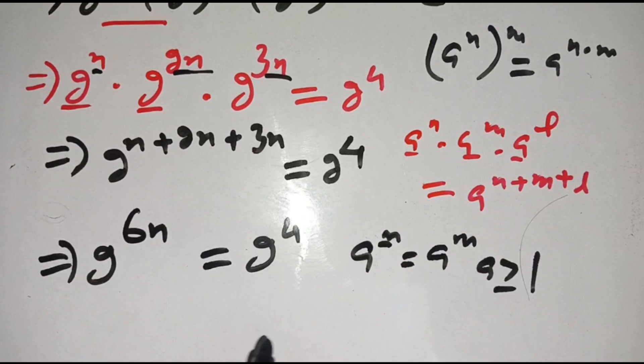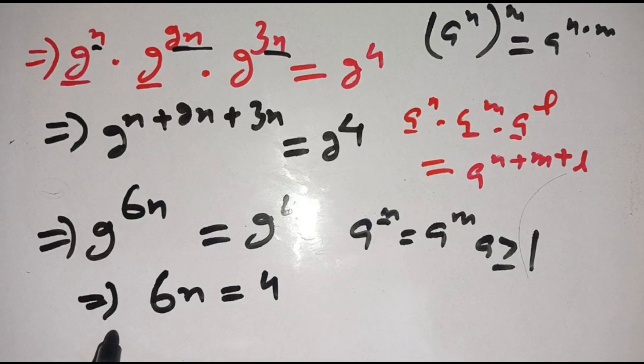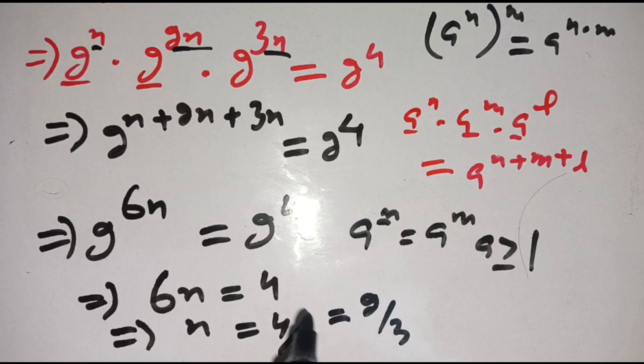Which implies 6n is equal to 4. On dividing both sides by 6, we get n is equal to 4 divided by 6, which is equal to 2 divided by 3.